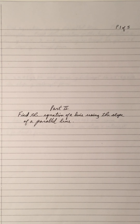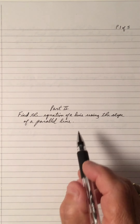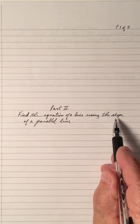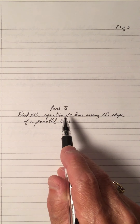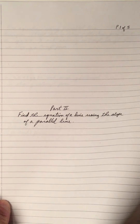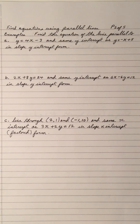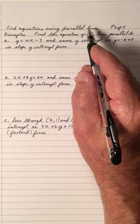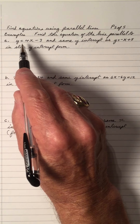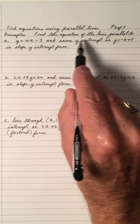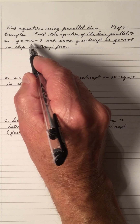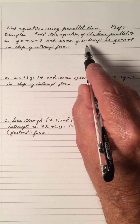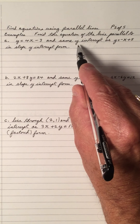Hi, welcome to my video on finding an equation of a line using the slope of a parallel line. This is part 2 — part 1 was done in the previous video. Find the equation using parallel lines. Let's do some examples and then I have some for you to do. Find the equation of a line parallel to y equals 4x minus 3 and the same y-intercept as y equals negative x plus 5.